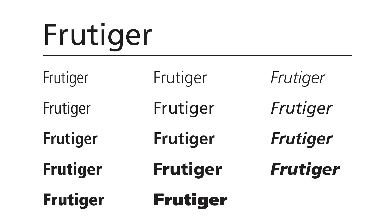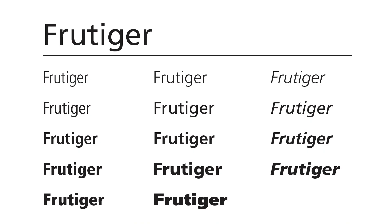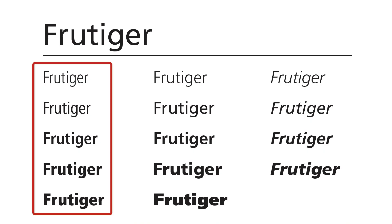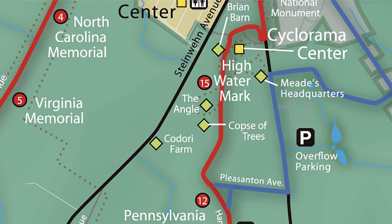Frutiger is also an excellent choice — my second favorite, and it's the typeface used on National Park Service maps. It comes in a wide range of weights and has an excellent condensed set. Compared to Helvetica, Frutiger has a bit more style and it's very readable at small sizes, so it's definitely worth a look. And here it is on some maps.